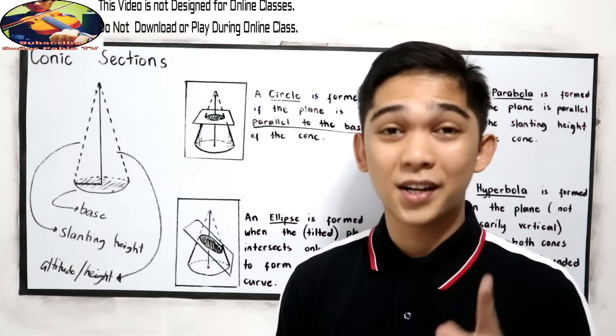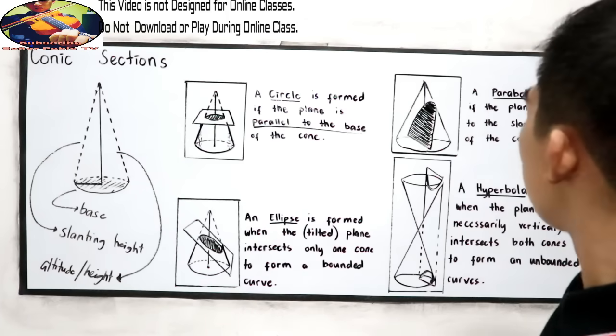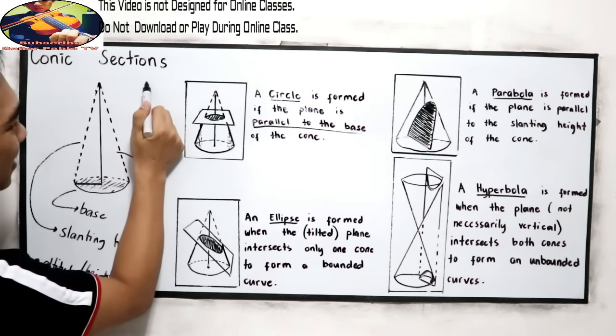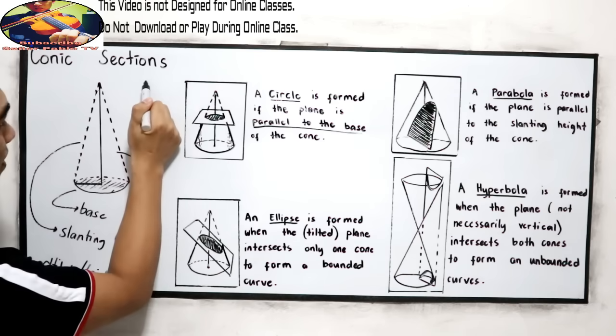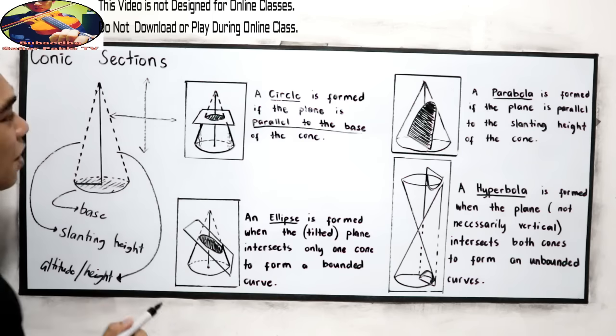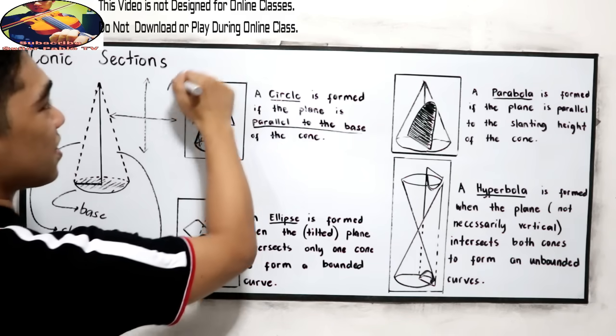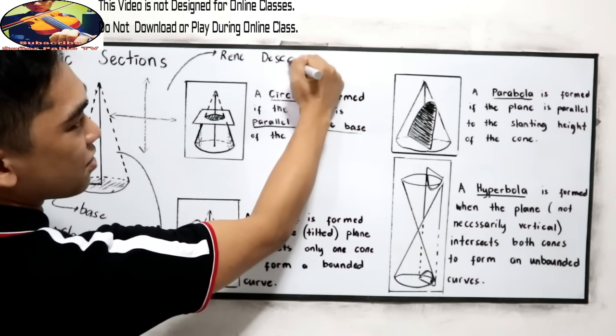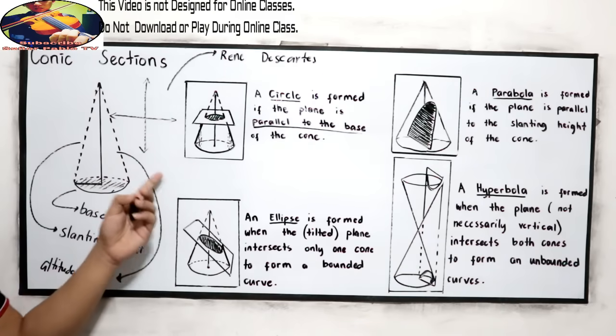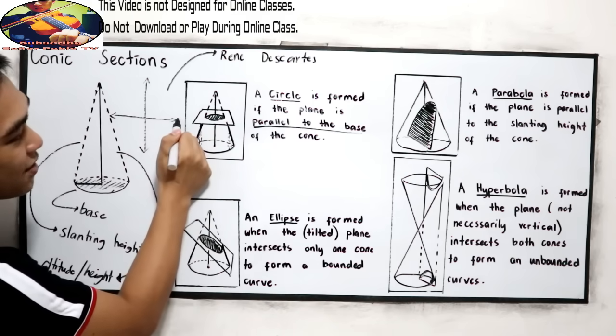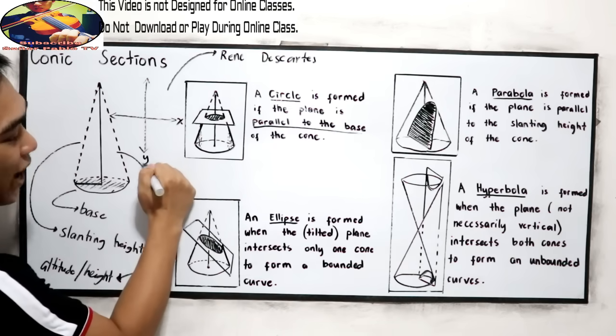So, you better recall your Cartesian plane. I will write it here. The proponent of the Cartesian plane is Rene Descartes. That's why it's called rectangular coordinate system or Cartesian plane. Now, this is our X-axis and our Y-axis.